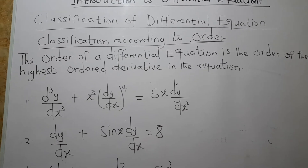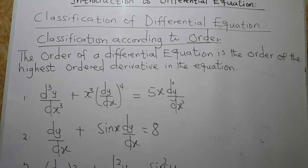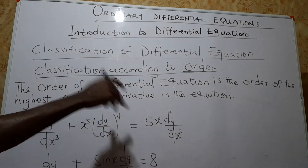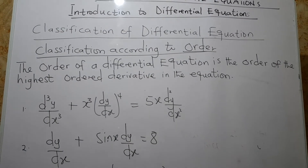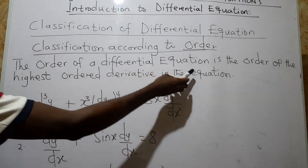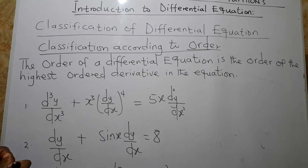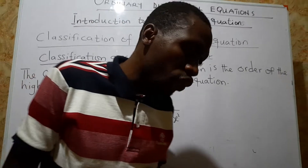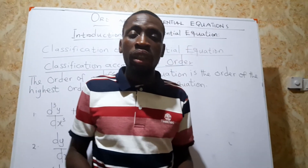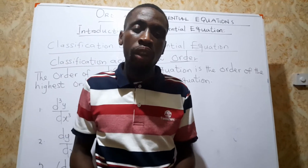Since we know we have two types — ordinary and partial — and our attention will be on ordinary differential equations, let's talk about classification according to order. The order of a differential equation is the order of the highest order derivative in the equation. When a differential equation is given to you, check the highest order derivative; that order becomes the order of the differential equation.